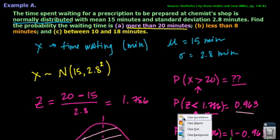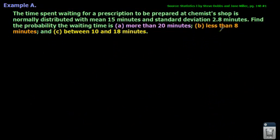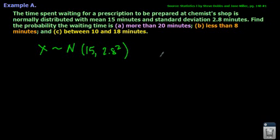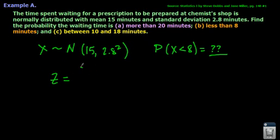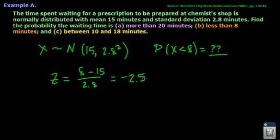Part B, we approach the same way. What's the probability that we wait less than 8 minutes? We have X such that our normal distribution has mean 15 minutes and variance 2.8 squared. We're trying to find P(X < 8). Let's find our Z-score associated with a value of 8. So, 8 minus 15 divided by 2.8. When I plug that into my calculator, a negative number comes out, because 8 is less than our mean of 15, so we're some standard deviations below.